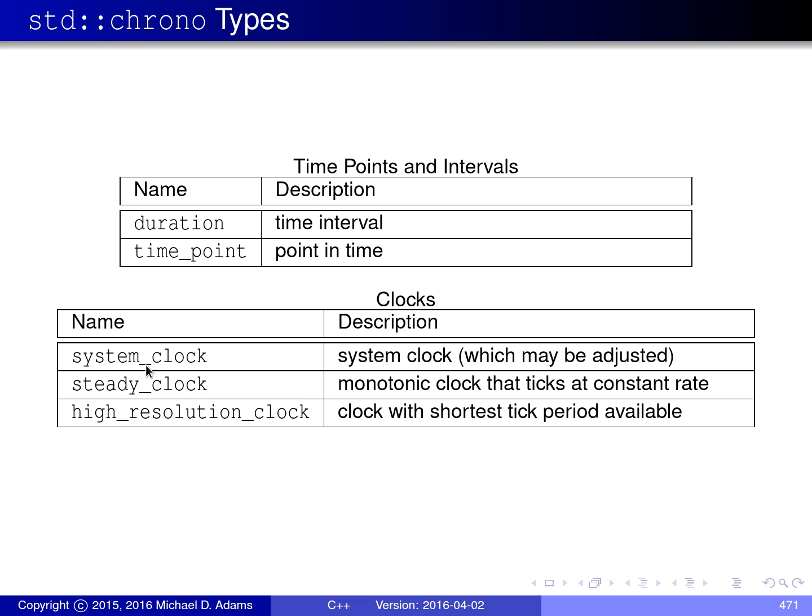The first of these is called system_clock, which corresponds to the operating system's clock that's normally used for measuring real time. There's steady_clock, which is a monotonic clock. In other words, it's a clock that's guaranteed to increase monotonically with time.